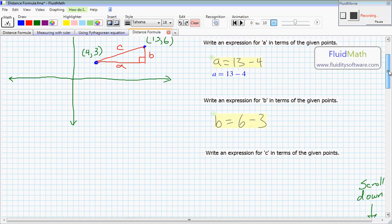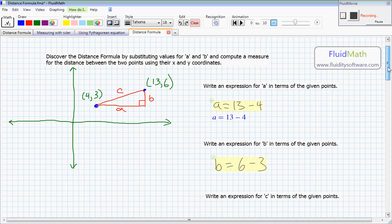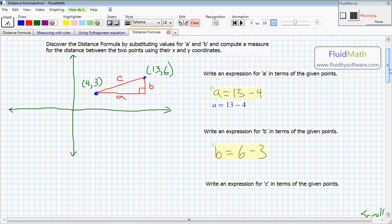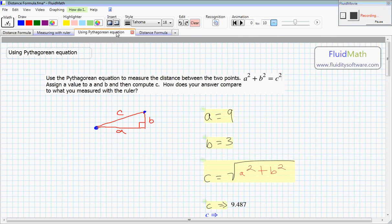So let's scroll down a little more. And now it says write an expression for c in terms of the given points. Well we know, let's just check this again. We know that c was equal to the square root of b squared plus a squared. And c is equal to nine point four eight seven. That's the same as what we got on the last tab here.